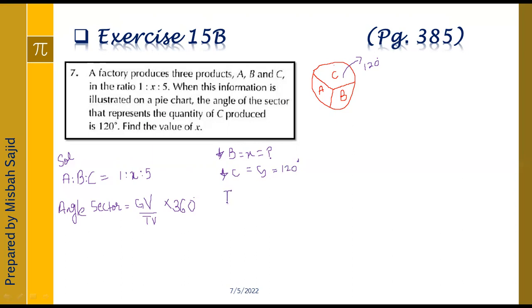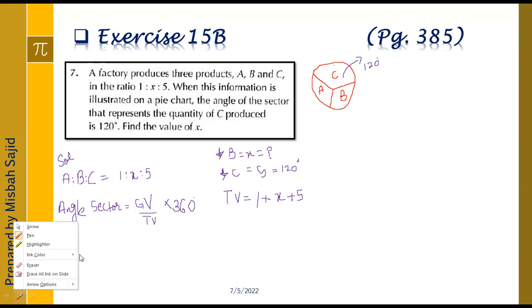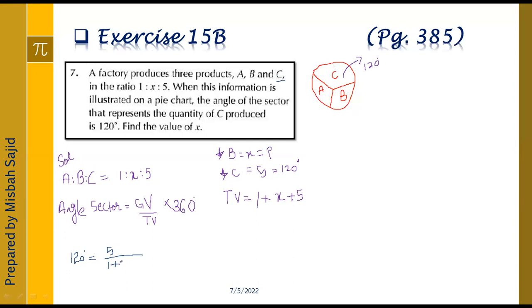We are talking about total value — this product is produced in the factory, so we add the ratio: 1 + X + 5. We have the value of C and the angle is given, so we apply the formula. The angle of sector for C is 120 degrees, equal to 5 divided by (1 + X + 5), multiplied by 360 degrees.